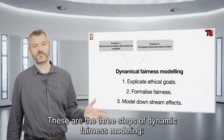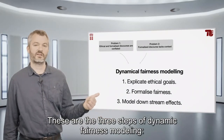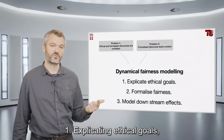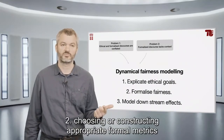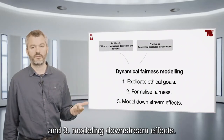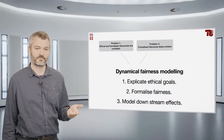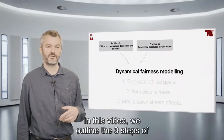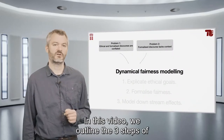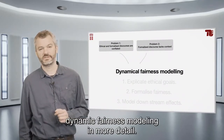These are the three steps of dynamic fairness modeling. First, explicating moral goals. Second, choosing or constructing appropriate formal metrics. And third, modeling downstream effects. In this video, we outline the three steps of dynamic fairness modeling in more detail.